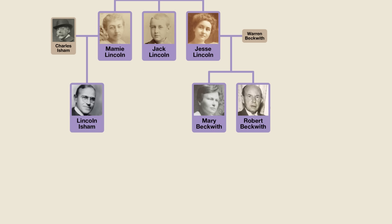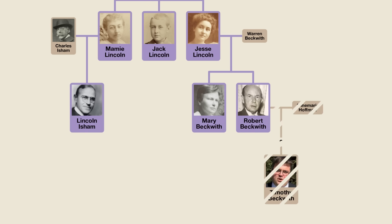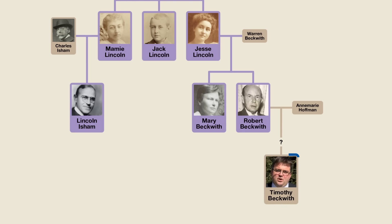However, there is still one mystery that hasn't been solved, which could mean that his bloodline does live on. Robert's second wife was Anne Marie Hoffman. During the first year of their marriage, Anne Marie gave birth to a son named Timothy. She claims that Robert was the father, but Robert was known to have had a vasectomy many years prior to Timothy's birth. Although he helped to raise Timothy, he did not claim to be his biological father. However, when Robert died, a settlement was made in which Timothy was given $1 million in exchange for giving up any future claims of being Robert's son. No DNA tests were done, so I guess we'll never know for sure.